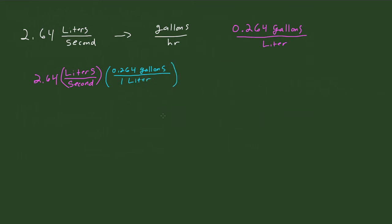And so if you inspect this, you'll see that when we multiply this, the liters are going to cancel out. So this is going to cancel out with that. And then in the numerator, we're going to be left with gallons, which is what we want.